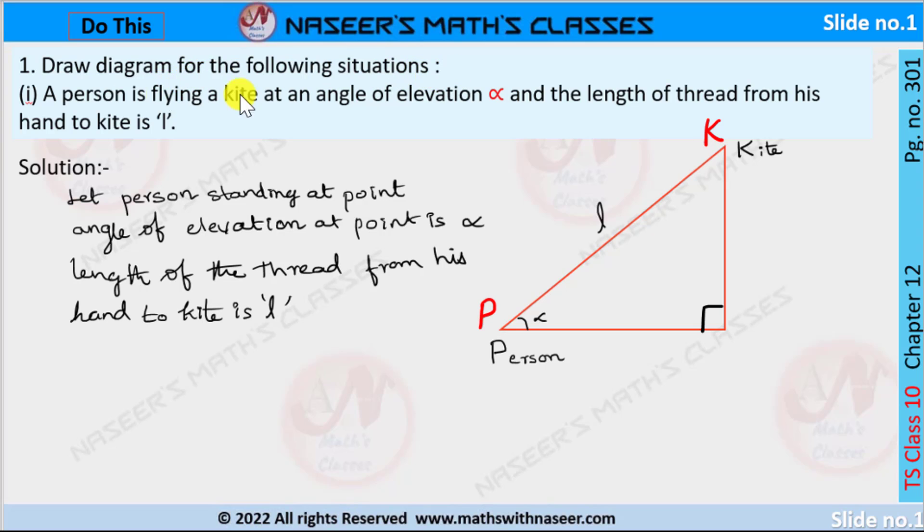Draw diagram for the following situations. First one: a person is flying a kite at an angle of elevation alpha.